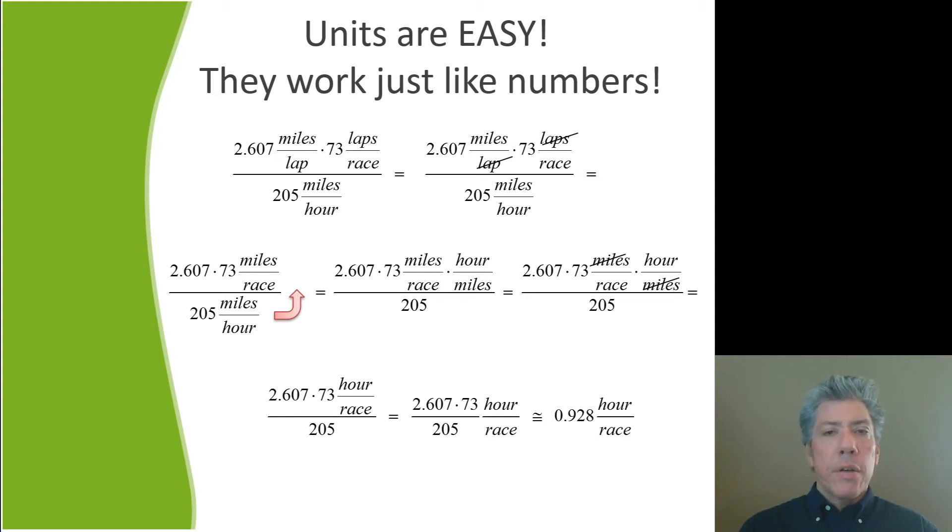So units can cancel each other quite nicely. That leaves us with miles per race in the numerator. Now notice one very important thing here. I did not combine the numbers yet. I highly recommend when you are solving problems, whether it be a homework or exam or anything, I highly recommend that you work with the units first to make sure that all these numbers you're going to plug into your calculator. Because some of the equations are pretty long, to make sure the result you get is what you want. So let's continue working with the units first. Now, you'll notice we're on the second line. We've got miles per race in the numerator and miles per hour in the denominator.